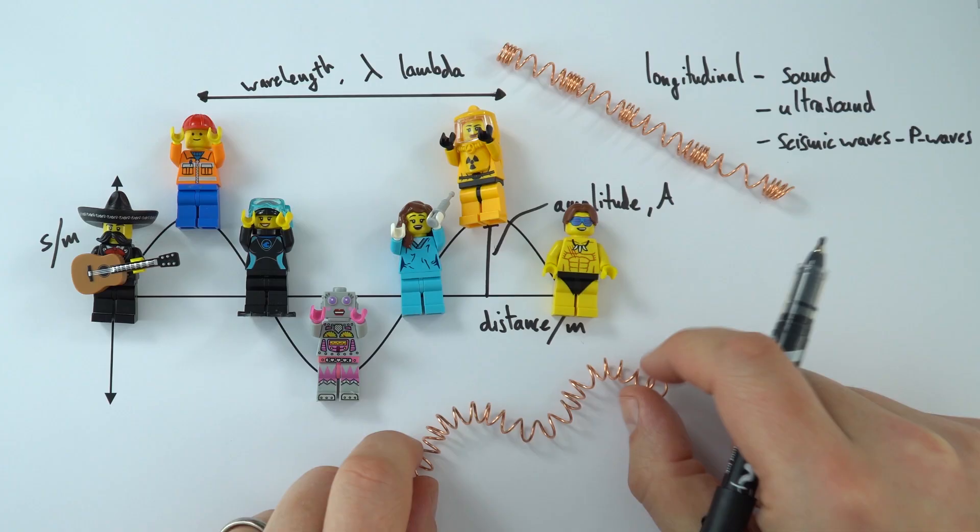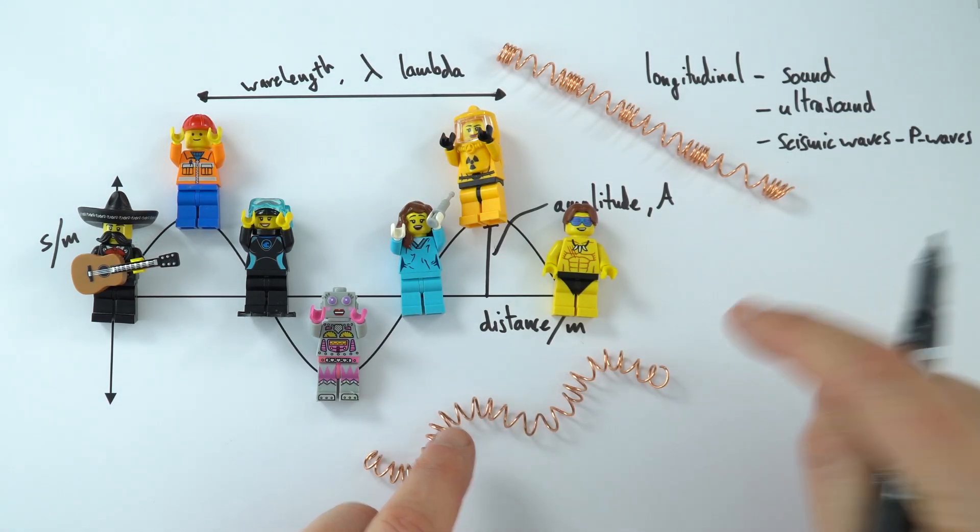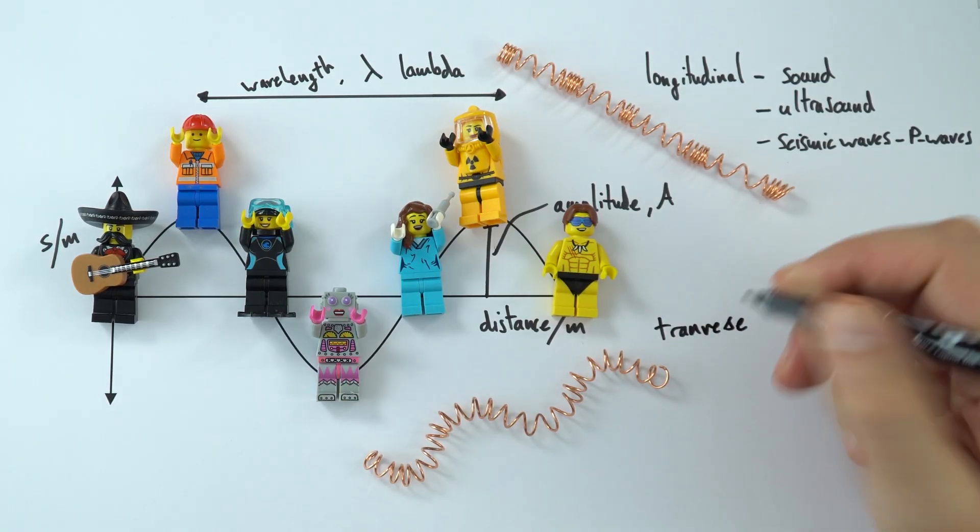When it comes to transverse waves, again, what we now have is the particles which are oscillating at 90 degrees to the direction of energy transfer. So this is our transverse wave. And again, we can think about the amplitude.